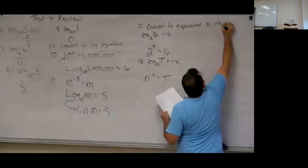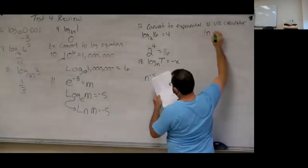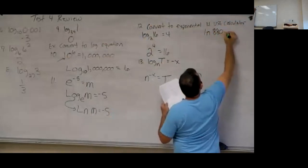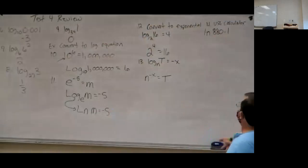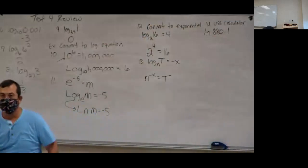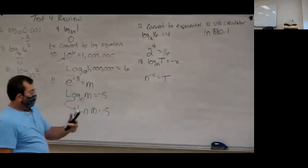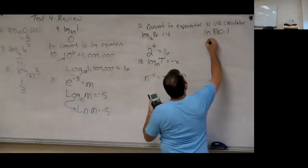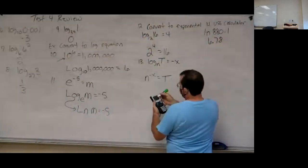Number 14: use the calculator to find ln(880.1). When they ask you to do logarithms, round to four decimal places. Hit the ln button on the calculator and punch in 880.1. Going to four decimal places, I'm getting 6.7800 — and then the next digits look like 003, so approximately 6.7800.